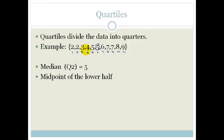The midpoint of the lower half is called Q1, the first quartile. So the first quartile, Q1, is the midpoint of the lower half, which is going to be 3. We've got 2, 2, 3, 4, 5. So the midpoint of that is going to be 3. So the lower quartile is 3.